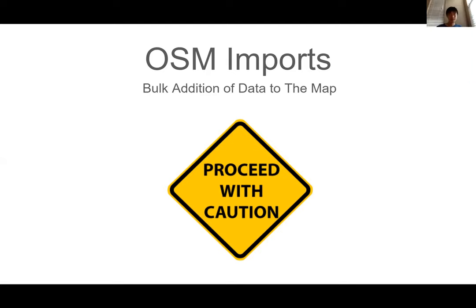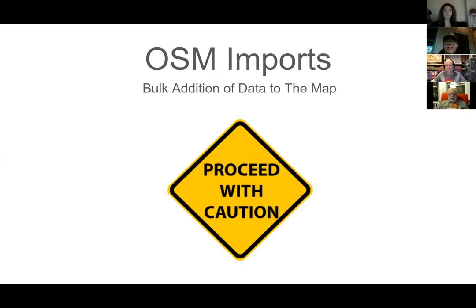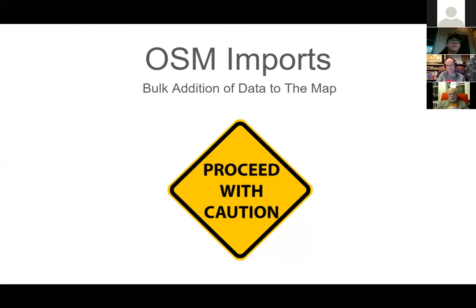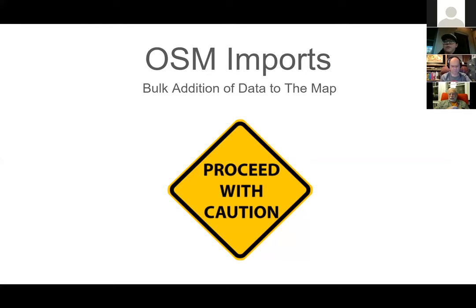Essentially, an import is a bulk addition of data to the map. It can come from lots of different sources. A normal editor uses iD very commonly and does edits one at a time, using imagery and local knowledge to add to the map. The import is taking bulk data and doing bulk functions on it so that when you bring it into the map it expedites the creation of certain layers.